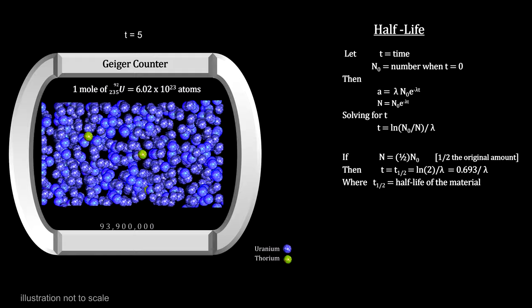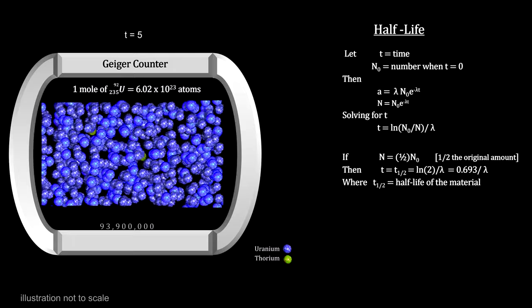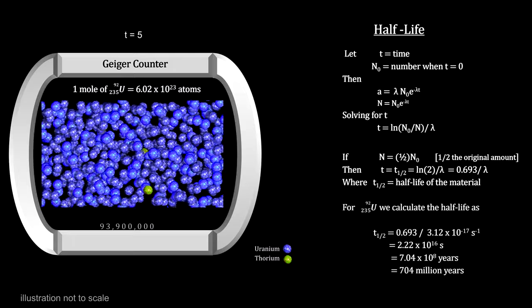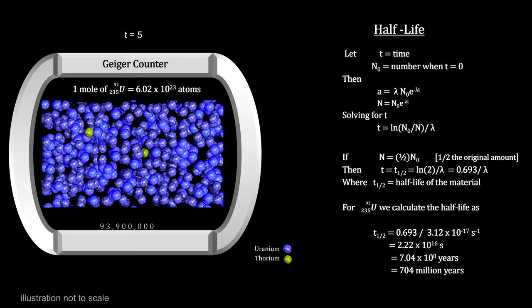The half-life is the time it takes for the material and activity to be reduced by half. For uranium-235, we get a half-life of 704 million years.